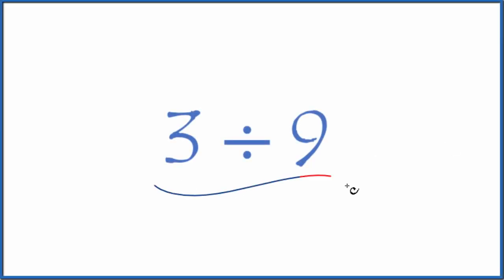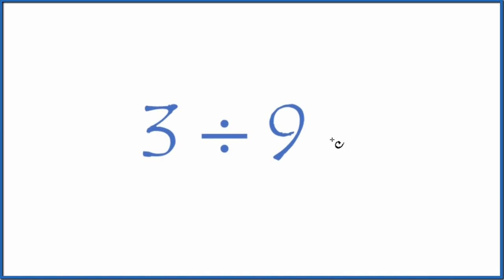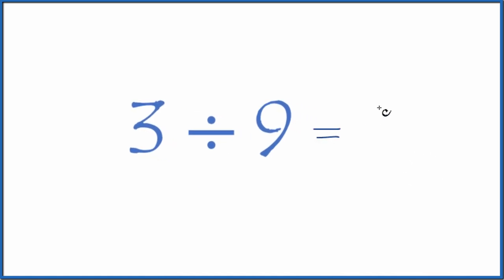All right, let's divide 3 by 9. The first thing to do is let's just think of this as a fraction. So 3 divided by 9, that's equal to the fraction 3 ninths.